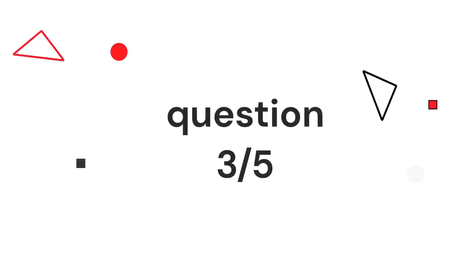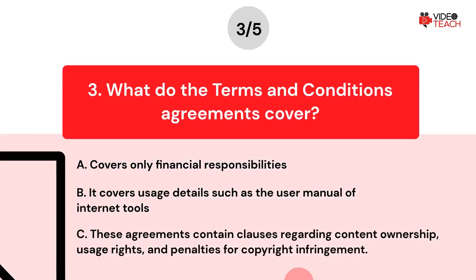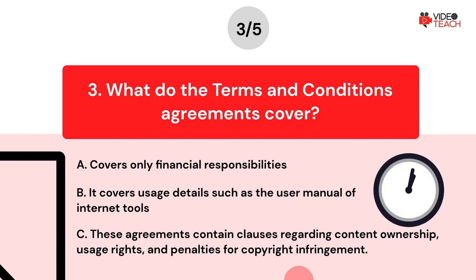Question number three. What do the terms and conditions agreements cover? Option A: It covers only financial responsibilities. Option B: It covers usage details such as the user manual of Internet tools. Option C: These agreements contain clauses regarding content ownership, usage rights, and penalties for copyright infringement. Now you have about 15 seconds to think about your answer.